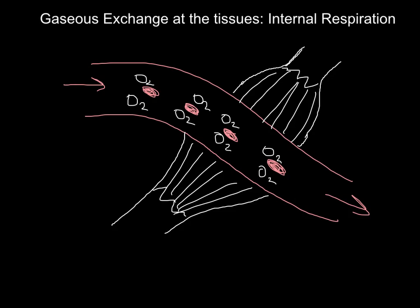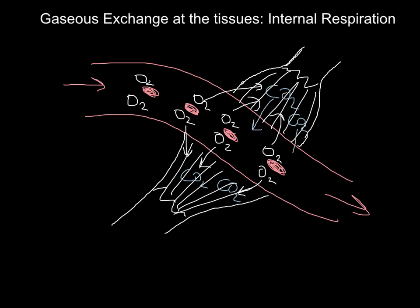The muscle tissue wants the oxygen — the blood is just transport. So the oxygen diffuses from the blood into the muscle tissue, because it's in higher concentration in the blood than in the surrounding muscle. Meanwhile, the contracting muscle has been producing CO2, so CO2 is in higher concentrations in the muscle than in the blood. Therefore CO2 diffuses from the muscle into the blood, which then flows back to the heart and lungs to drop off the CO2 and pick up oxygen.